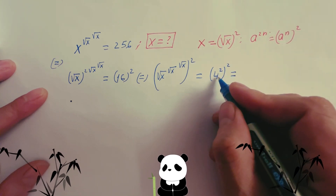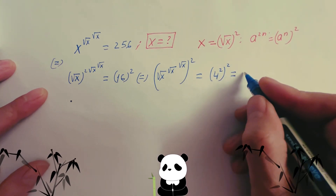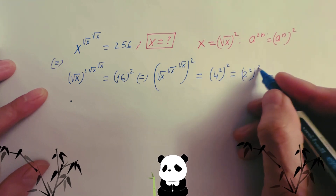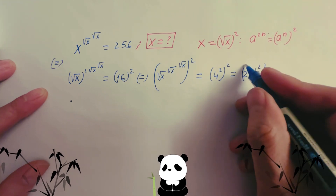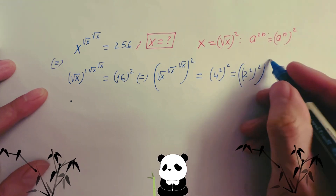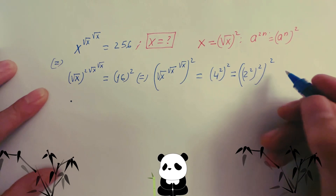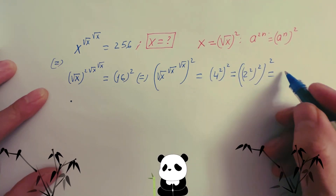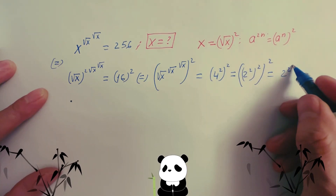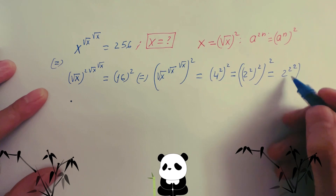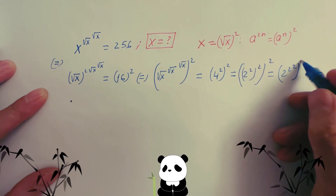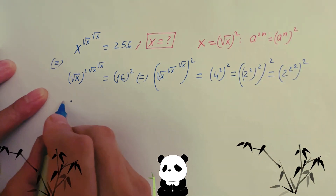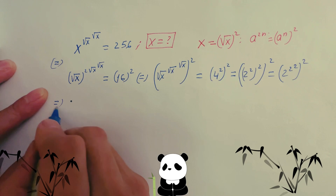So you know 4, you can write as 2 to the power 2, to the power 2, and then power 2 outside. That equals 2 to the power 2, to the power 2, to the power 2.